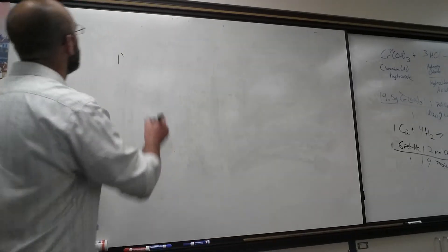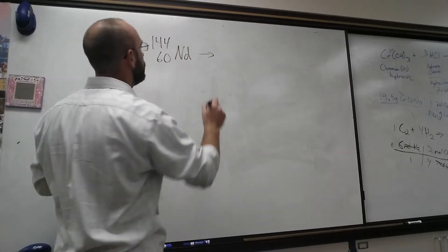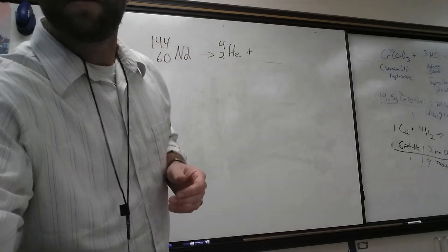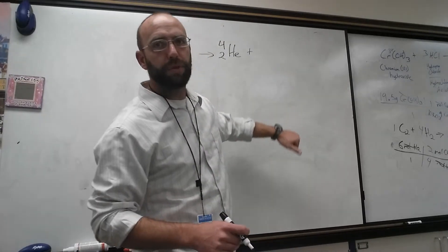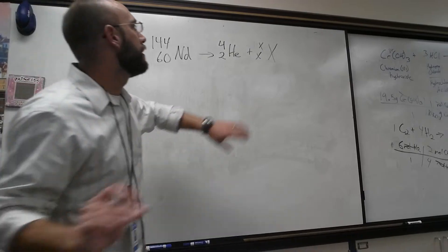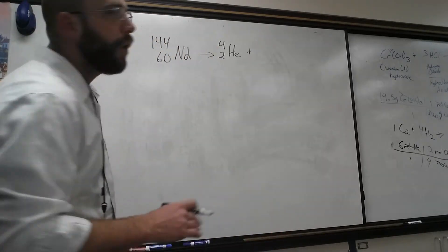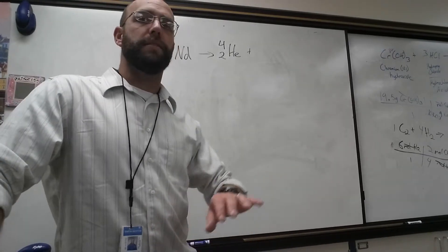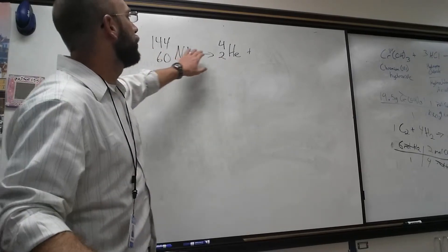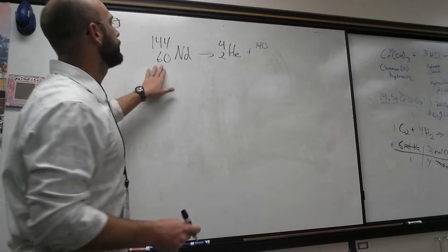The first one is 144-60 neodymium yields 4-2-He plus blank. Sometimes you'll see these written with variables, X-X-X. All this is is an addition problem, not complex math, not stoichiometry, just simple addition and subtraction. Treat the yield arrow like an equal sign. So 144 equals 4 plus X. All I'm going to do here is subtract and I get 140, and 60 minus 2 is 58.